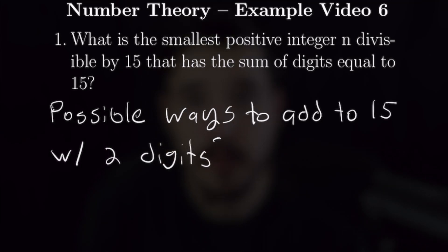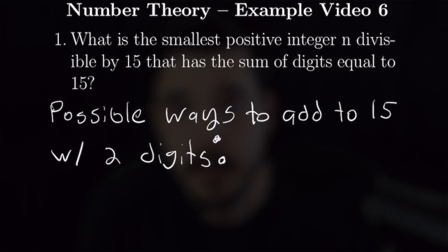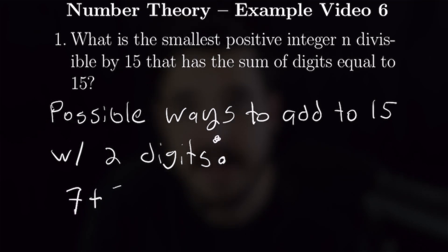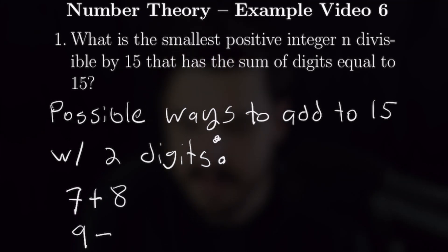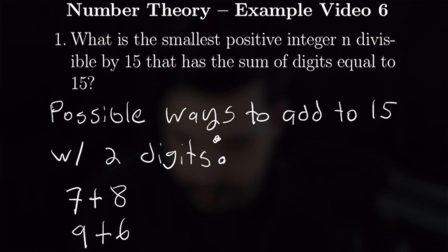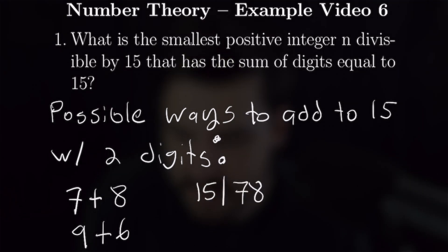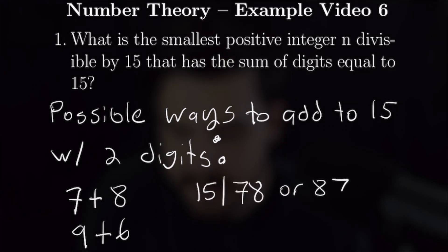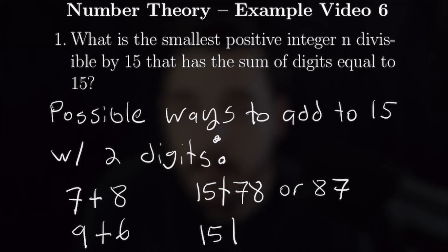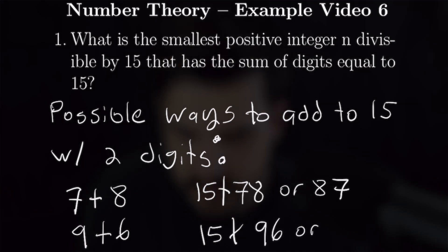There are only two ways to construct a two-digit number whose digits add up to 15: by adding 7 and 8, and 9 and 6. We can see that 15 does not divide 78, 87, 96, or 69, which means we have to move on to three-digit numbers.